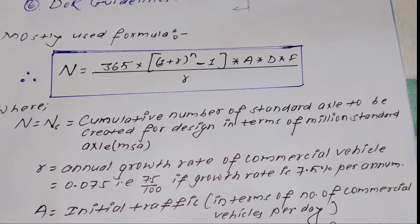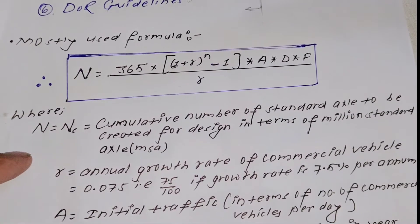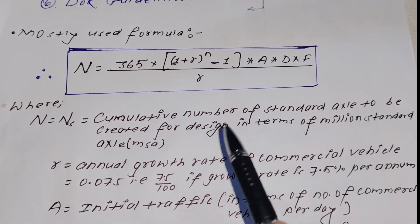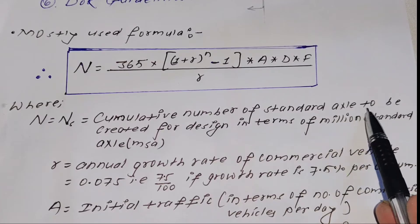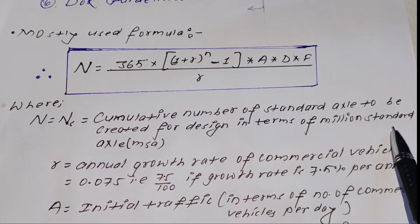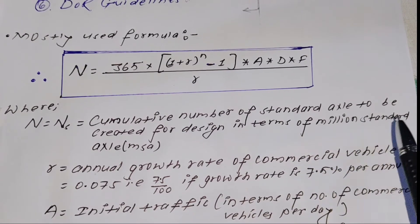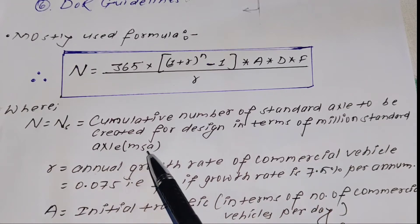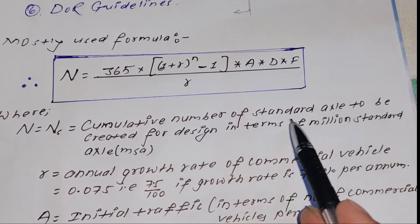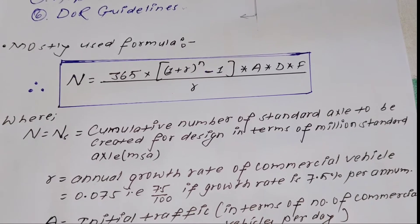N equals the cumulative number of standard axial loads — the cumulative standard axial load to be considered for design, expressed in terms of million standard axial loads (MSA). This represents the design traffic.